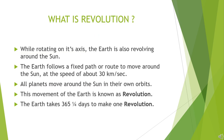Now let us understand what is revolution. While it is rotating on its axis, the earth is also revolving around the sun. The earth follows a fixed path or route to move around the sun at a speed of about 30 kilometers per second. This path is called the orbit. Like the earth, all the planets move around the sun in their own orbits. The movement by which the earth revolves around the sun is known as revolution. The earth takes 365 and one-fourth days to make one revolution.